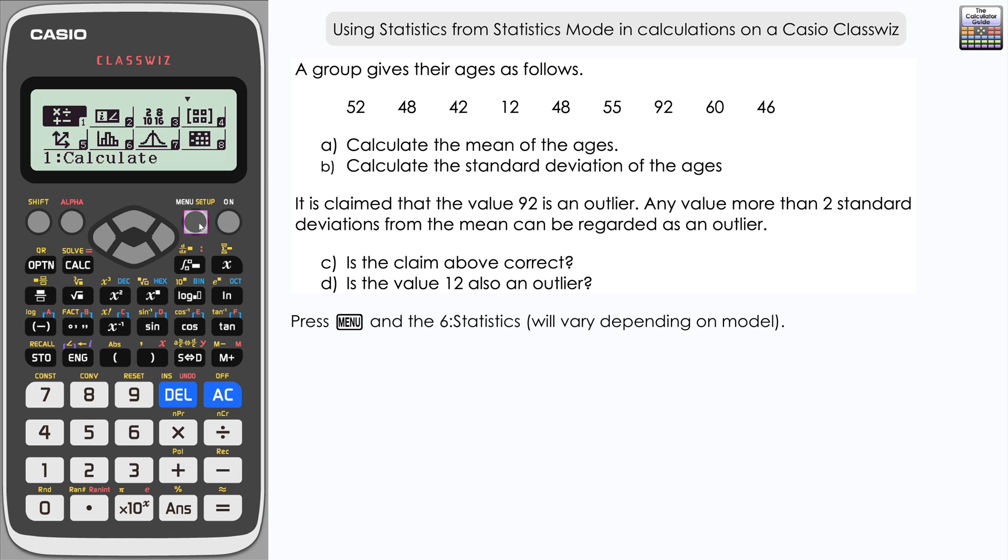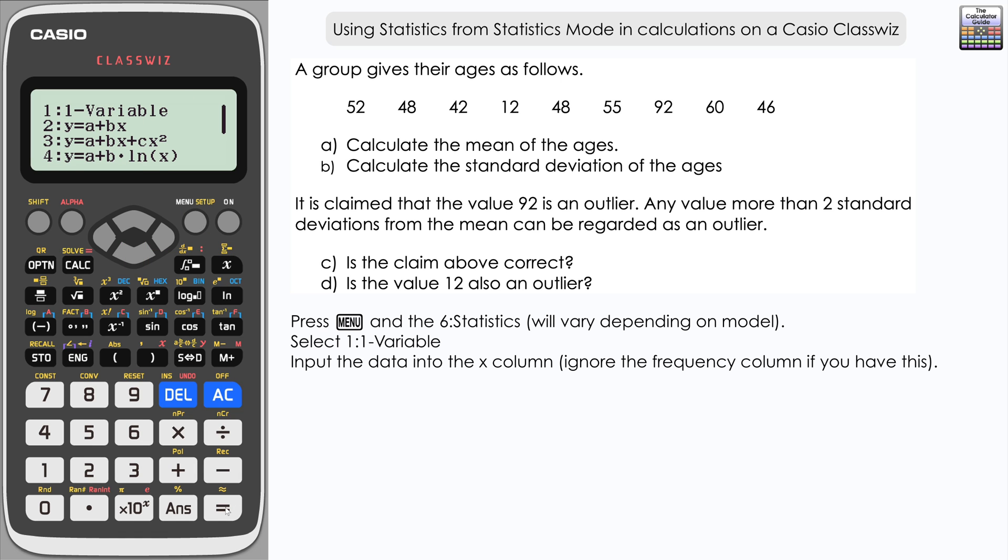From the menu, let's access statistics mode and select 1 for one variable. Then we need to input our age values into the X column. You may have frequency activated on the right-hand side, which should pre-populate with 1 as you input your X values. Just input your X values in the column.